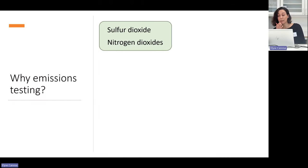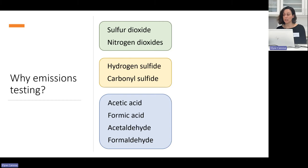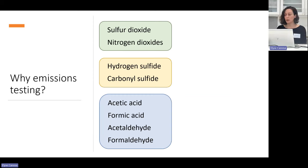The emissions we are primarily concerned with in cultural heritage environments are first sulfur dioxide and nitrogen dioxides. We are also interested in reduced sulfur gases, for example hydrogen sulfide and carbonyl sulfide. And we're also interested in certain organic gases such as acetic acid, formic acid, acetaldehyde, and formaldehyde.